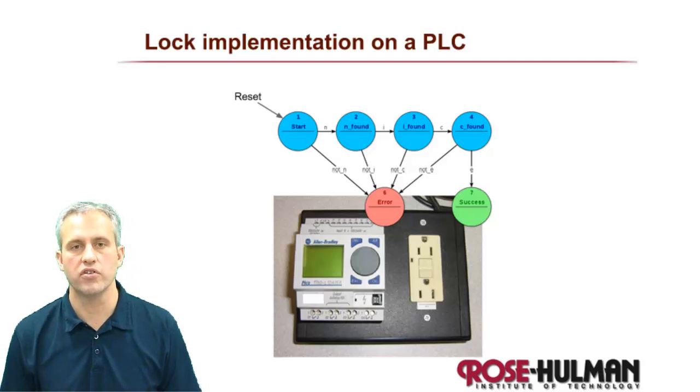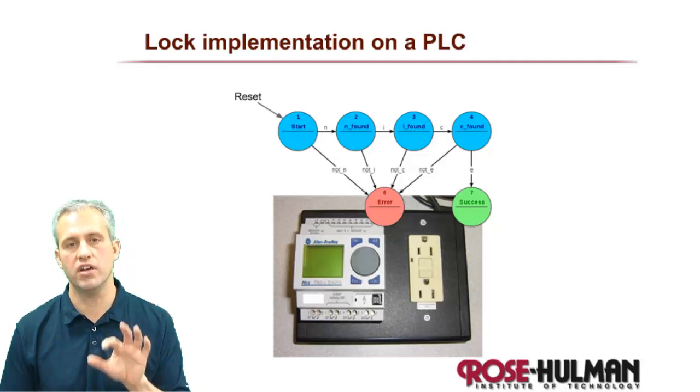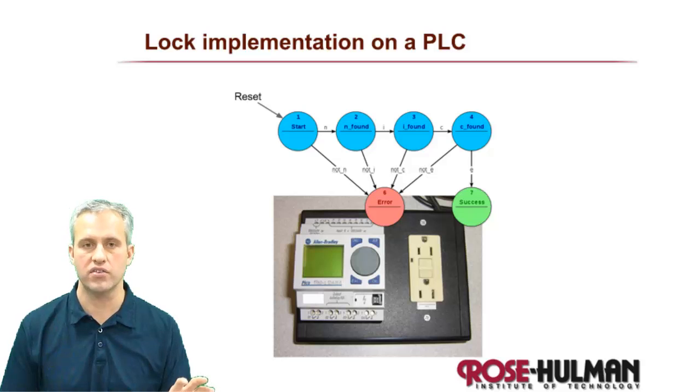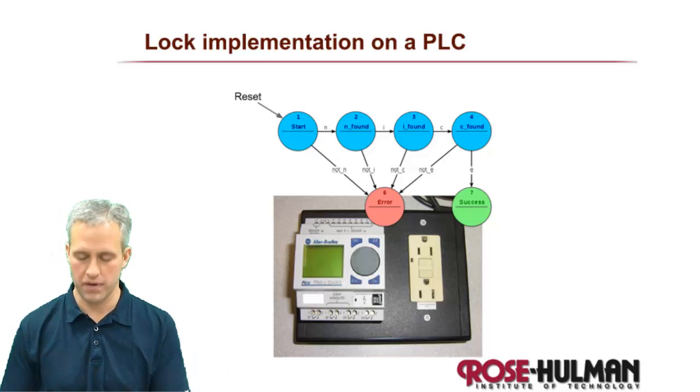All right, so let's do our first implementation. We're going to do this finite state machine of the 430 lock that we made last time and implement it on a PLC.